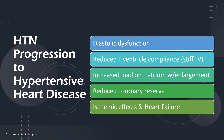As the ventricle attempts to push blood out into the aorta, the high systemic vascular resistance makes the left ventricular muscle work harder to maintain cardiac output. Because of this increased workload, the left ventricular muscle gradually hypertrophies — this is the origin of hypertensive heart disease. Combined with left ventricular hypertrophy, diastolic dysfunction causes the LV to become stiffer, contributing to the development of hypertensive heart disease.